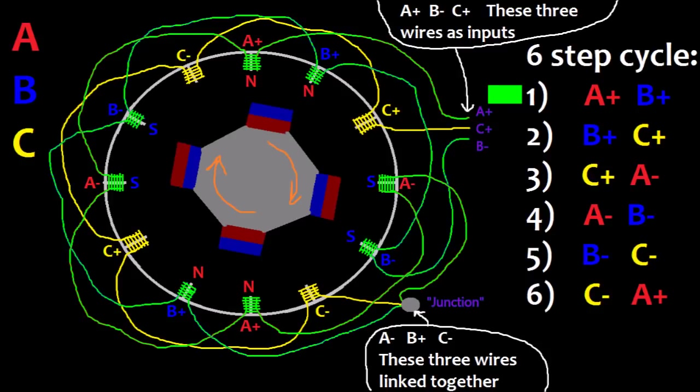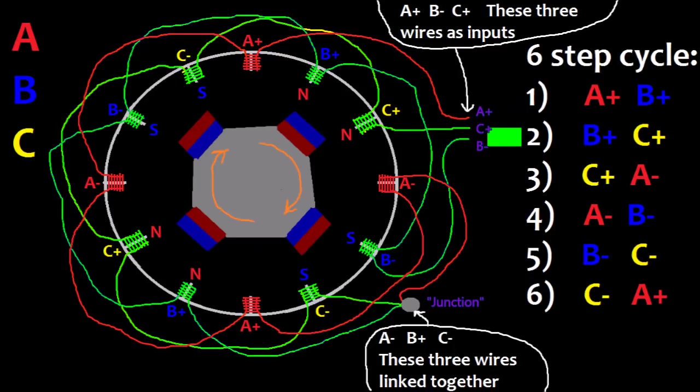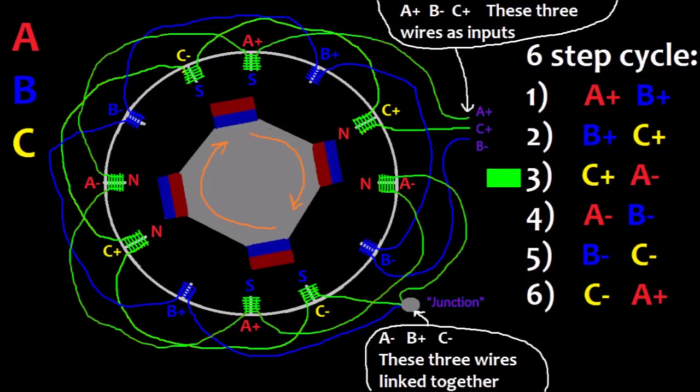And the magnetic field from this causes the rotor to line up with those coils. The next step is B plus C plus, and that you have positive signal flowing in the C plus wire through the C coils to the junction, then flowing from the junction to the B plus wire in the forward direction through the B coils and out the B minus wire.